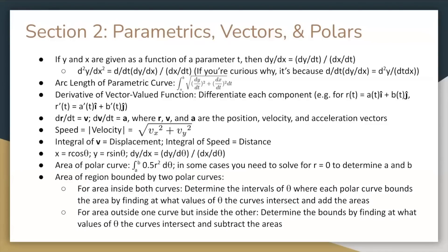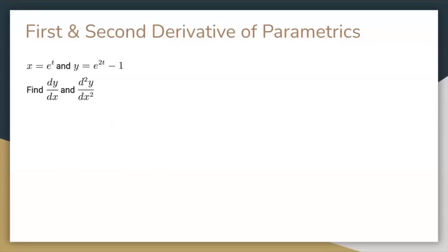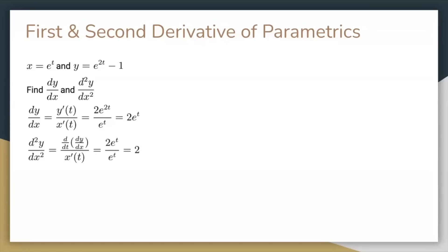Now we're getting into section 2. Here is the overview slide. Pause to read over it. We'll start with determining the first and second derivative of parametrics. If you're given y and x as a function of t, the first derivative, dy over dx, is given by y prime of t over x prime of t. In this case, it's 2e to the 2t divided by e to the t, which is just 2e to the t. To get the second derivative, you differentiate the first derivative with respect to t, and divide by x prime of t, and you will get 2.